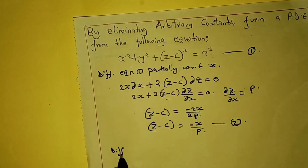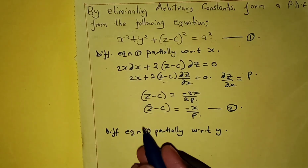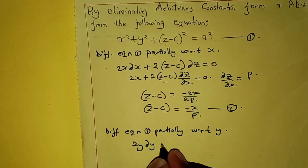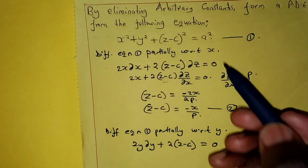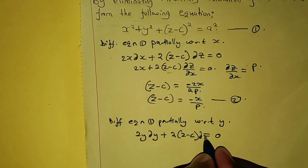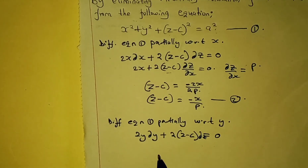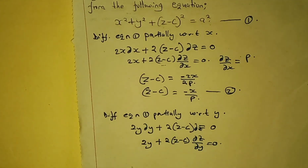Next step, we differentiate equation one partially with respect to y. We have 2y partial y plus 2 into (z minus c) equals zero. When differentiating s squared we get zero. So we divide every factor by partial of y and we have 2y plus partial z over partial y equals zero. So we make z minus c the subject.